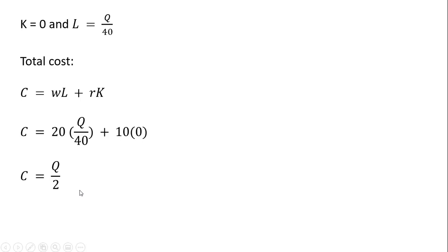So if the firm were to produce, say, 40 units of output, it would cost the firm $20 to do that.